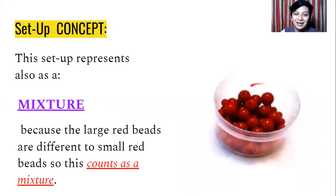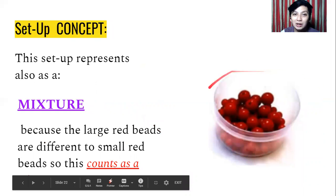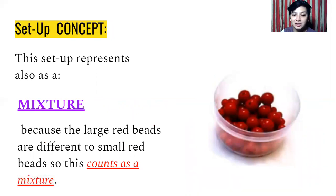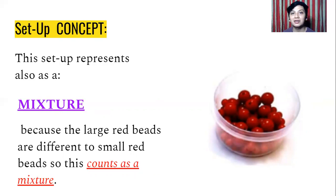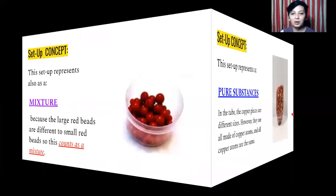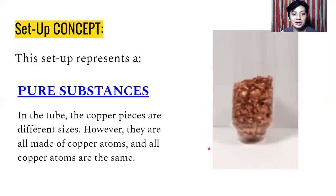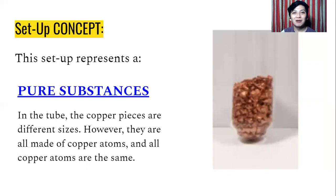An important concept: a container with large red beads and small red beads — even though they are the same color — is considered a mixture, because the large red beads are different from the small red beads. So it doesn't mean that the same color makes it a pure substance; different particle sizes count as a mixture. However, copper pieces that differ in size but are all made of copper atoms are considered a pure substance, because all copper atoms are the same. Composition of the same element is a pure substance — always remember that.